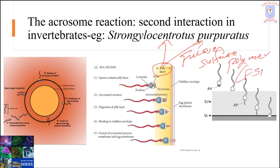Differences in the fine structure of sulfated polysaccharides in egg jelly contribute to species specificity of fertilization in marine animals. Interestingly, the ligand that induces the acrosomal reaction in sea urchin is a pure polysaccharide with no associated protein.